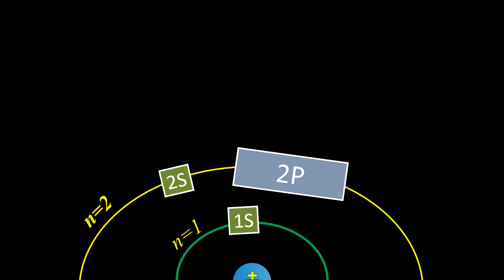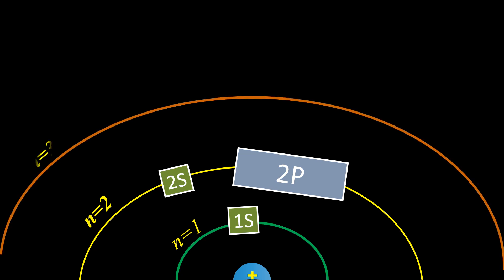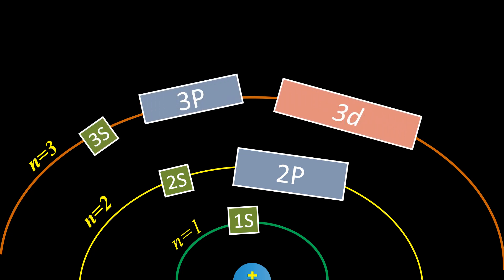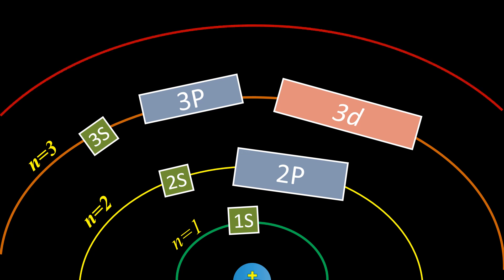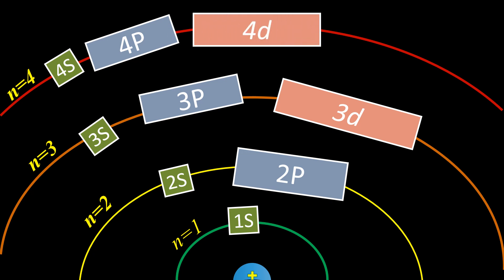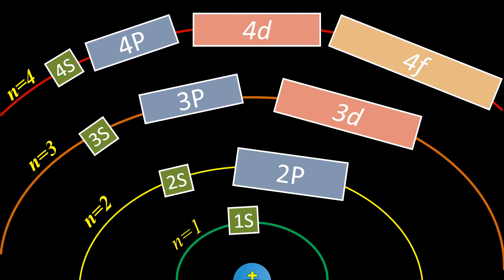For n = 4, it has four subshells: 4s, 4p, 4d, and 4f. So the pattern is: n = 1 means 1 subshell, n = 2 means 2 subshells, n = 3 means 3 subshells, n = 4 means 4 subshells. All should start from S itself. If it belongs to the 1st shell — 1s; 2nd shell — 2s; 3rd shell — 3s; 4th shell — 4s.